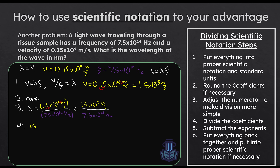Now in step four, I'm way more comfortable dividing 15 by 7.5 than 1.5 by 7.5 — this is just going to be 2. So I have my coefficient. In step five, I do the subtraction of the exponents: 10^8 ÷ 10^14 = 10^(8−14) = 10^−6. Putting it together: 2 × 10^−6 meters.